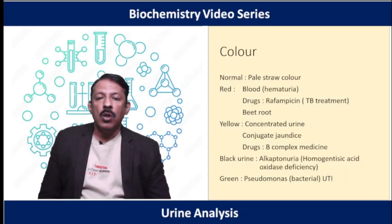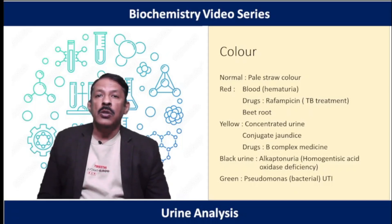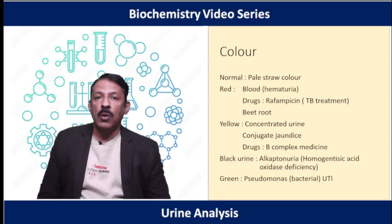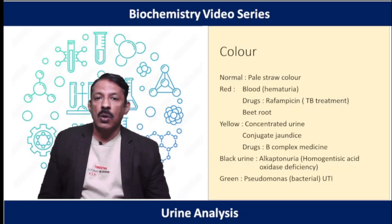The normal color of urine is pale straw. Red color urine occurs with hematuria — passing blood in the urine. Drugs like rifampicin, used in tuberculosis treatment, can cause red color urine. Food substances like beetroot can also cause red urine. Dark yellow color urine is usually concentrated urine, or occurs when there is conjugated hyperbilirubinemia — conjugated jaundice — where bile pigments enter the urine.